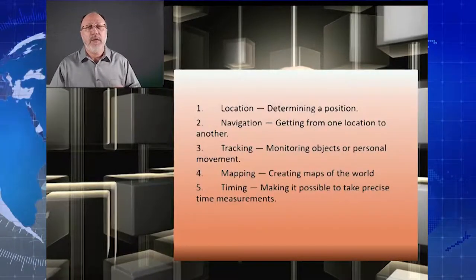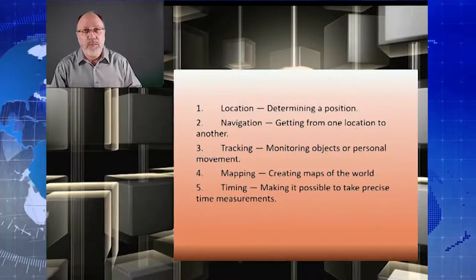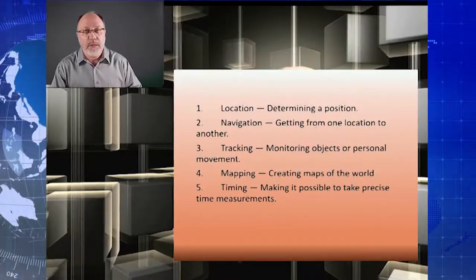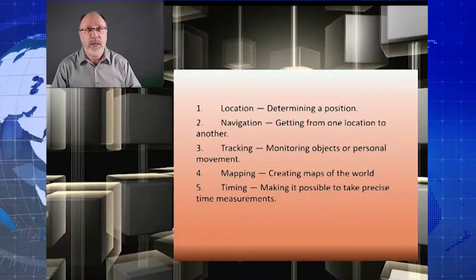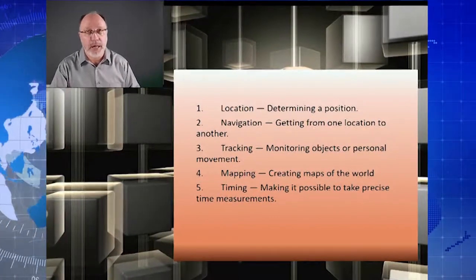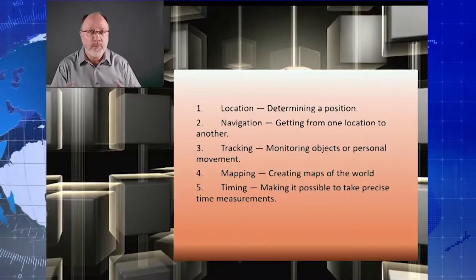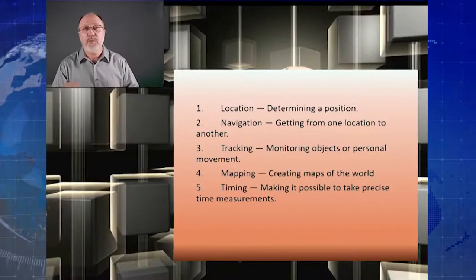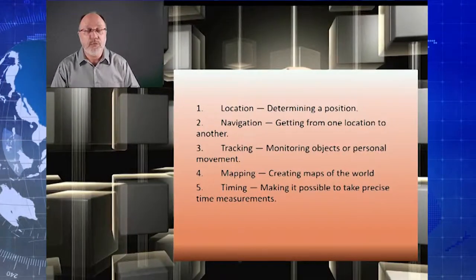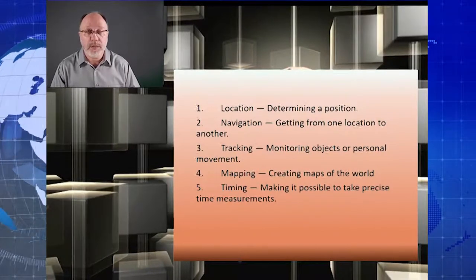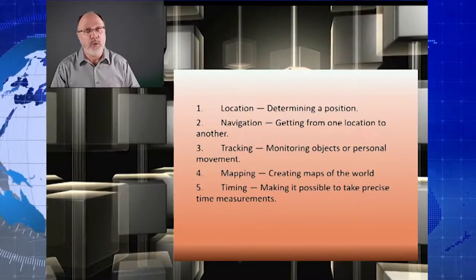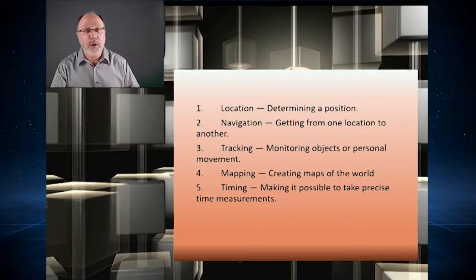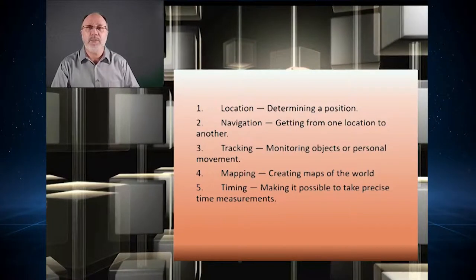GPS has five key functions: location — determining a position; navigation — getting from one location to another; tracking — monitoring objects and personal movement; mapping — creating maps of the world; and timing — making it possible to take precise time measurements.